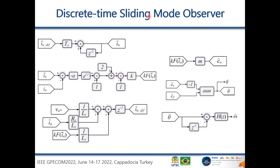Going to the discrete-time sliding mode observer, we can see a lot of block diagrams. One of the biggest contributions is to clarify and present in a simpler, straightforward manner, already in the digital domain with digital filters, which is a good approach for those with first contact with discrete-time sliding mode observers. Computing all the blocks as shown, we can finally get the position theta as well as omega, the speed. All the details of these blocks, including constants, are presented in the paper.